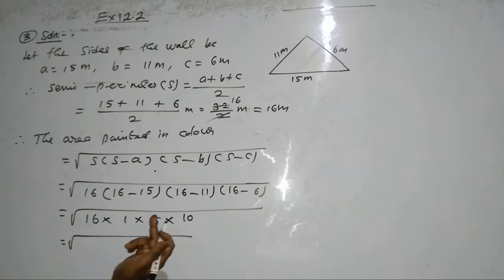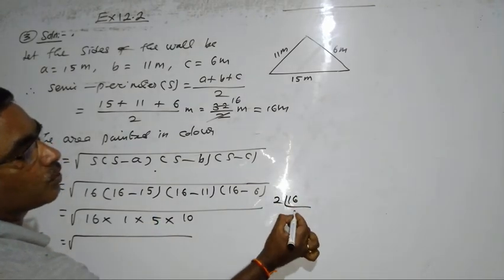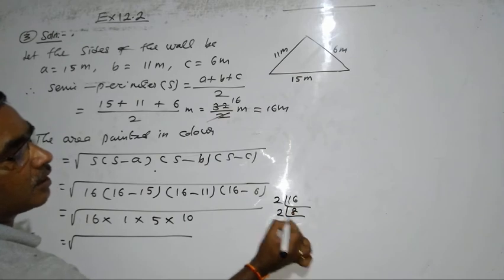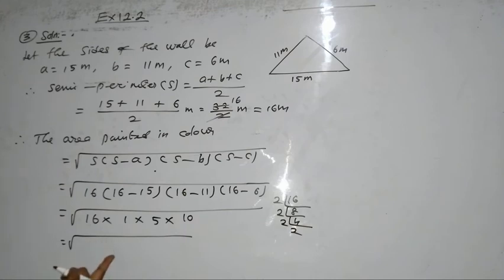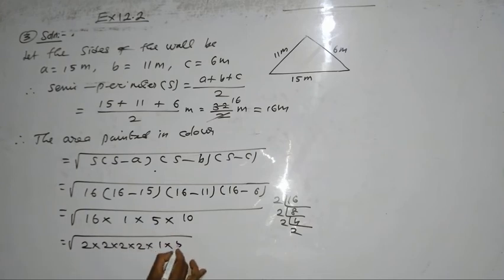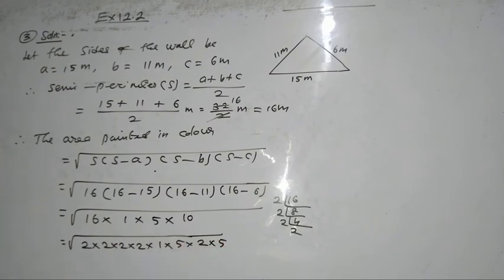Now, you can make the prime factors of 16 and 10. Because 5 is a prime number. So, 16 make it into factors: 2 into 8 is 16, and 2 into 4 is 8, or 2 into 2 is 4. So, 2 into 2, 2 into 2, 2 into 2. Then 1, 5, and 10: 2 into 5 is 10.